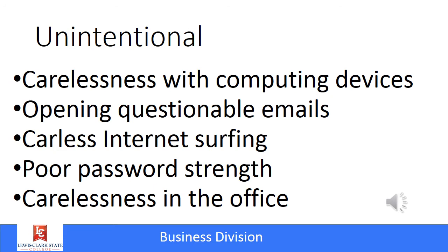This slide gives us some examples of unintentional threats, and they include carelessness: somebody just leaving a computer around and it gets stolen, opening a questionable email and clicking on the link and opening up a virus, careless internet surfing, poor password strength, and carelessness in the office — which could include leaving your office door open or putting sticky notes on your computer with all of your passwords listed there.